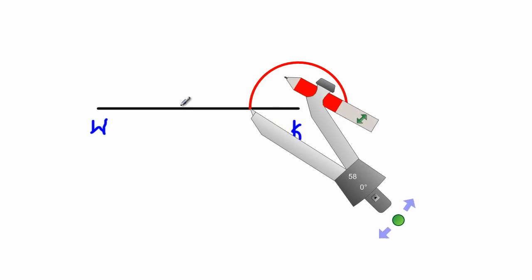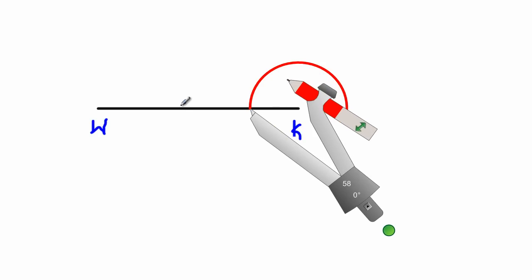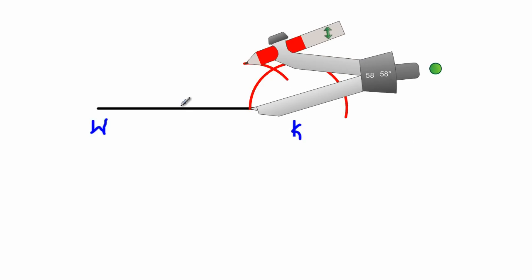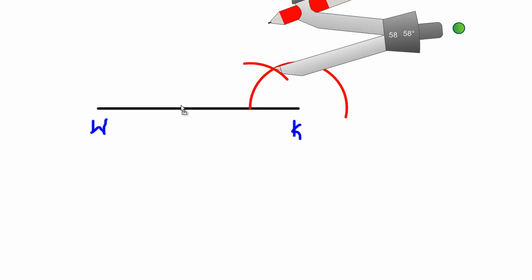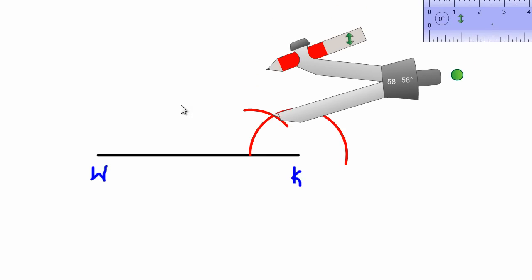I am going to just swing an arc from that point, cutting the arc that I swung before. Again, after I've swung that arc, I am going to take my compass and place it at that point of intersection, because if I'm constructing a 120 degree angle...